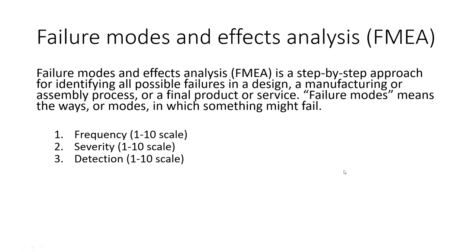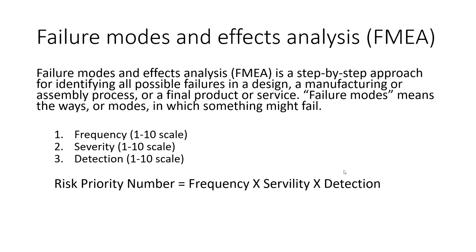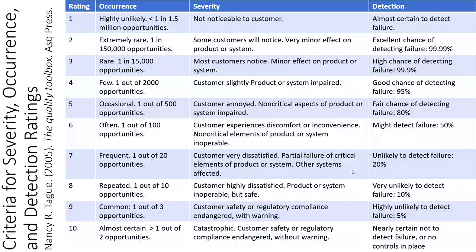Finally, is it possible to detect the failure even before it occurs? Based on these three criteria — occurrence, severity, and detection — it produces a thing called Risk Priority Number, by multiplying all the scores for all these categories. This definition is taken from asq.org, which you can check.